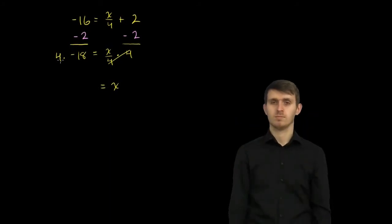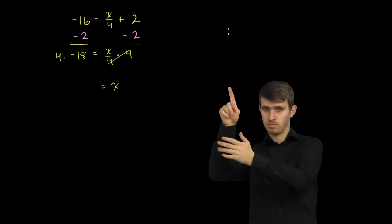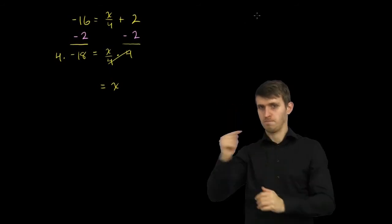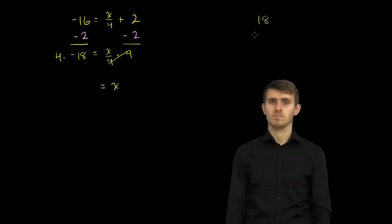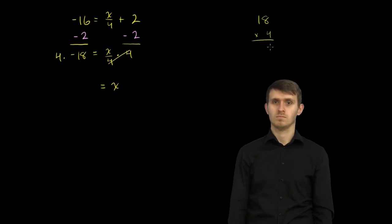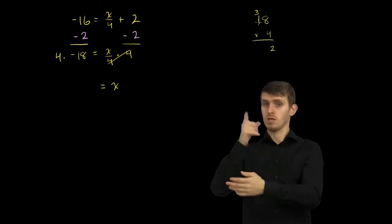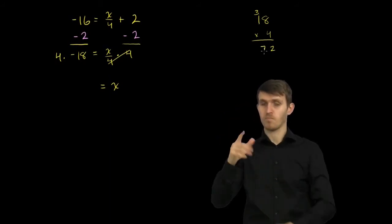And on the other side, 4 times negative 18. Let's see, let's just write it out. So 18 times 4. If we were to multiply 18 times 4, 4 times 8 is 32, 4 times 1 is 4, plus 3 is 7, so 72.